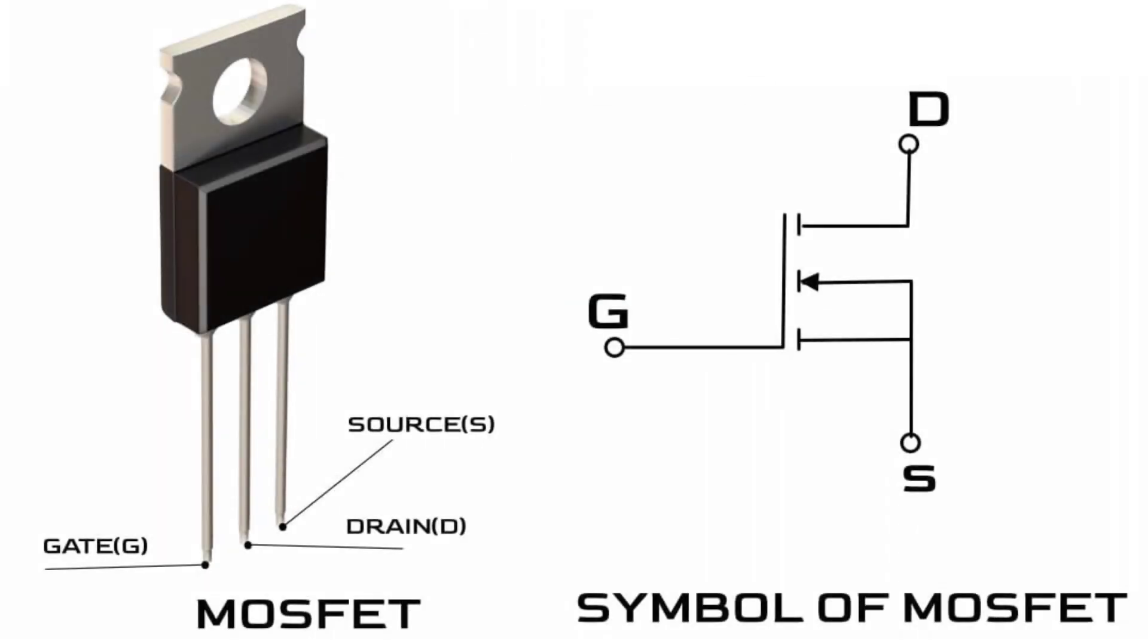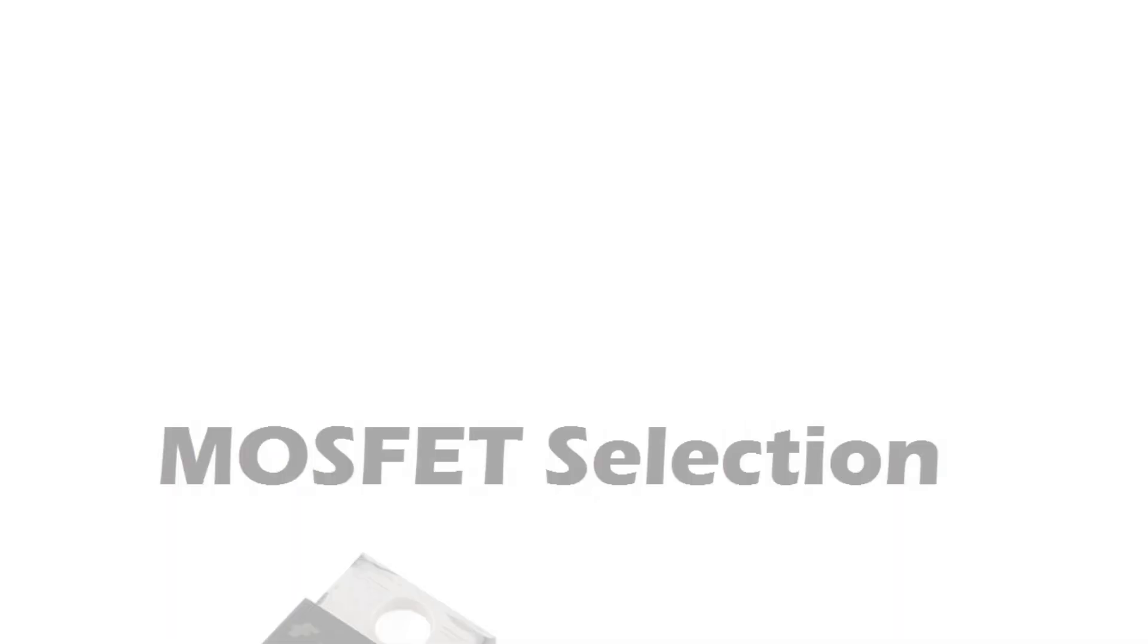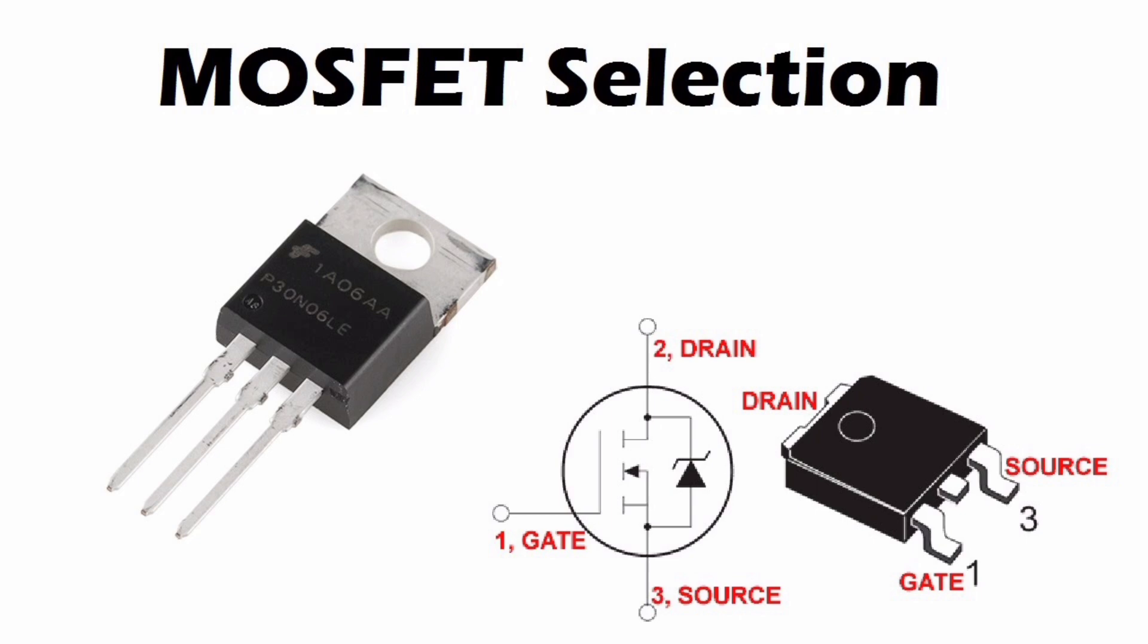Key features of an N-channel MOSFET include its structure. The device has three main terminals: drain, source, and gate. The channel between the drain and source is made of N-type material.